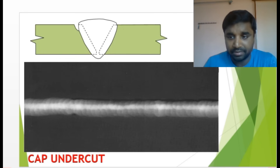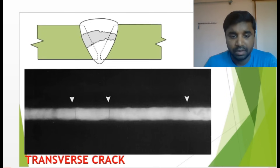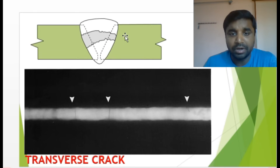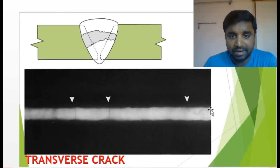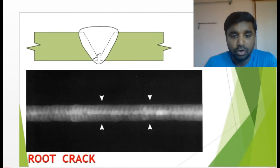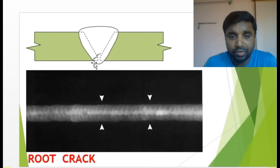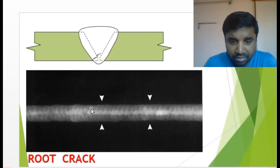Transverse crack — this runs in the transverse direction, not longitudinal. You can see here how a transverse crack looks. Root crack — when you are doing root welding and a crack has occurred, that is the root crack. You can see how a root crack looks here. This is the transverse crack, and this is the root crack.